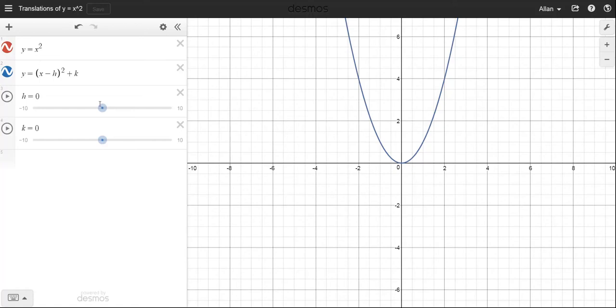But they look the same because right now the two parameters, h and k, are both zero, and as soon as I start changing these you'll see the original and then what the new graph looks like.